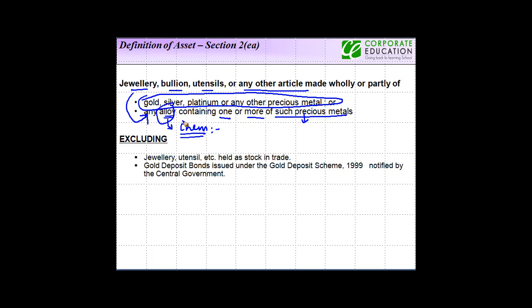So if there is an alloy which contains one or more of these metals, then any jewellery, bullion, utensil or other article made of such alloy are also included as an asset.